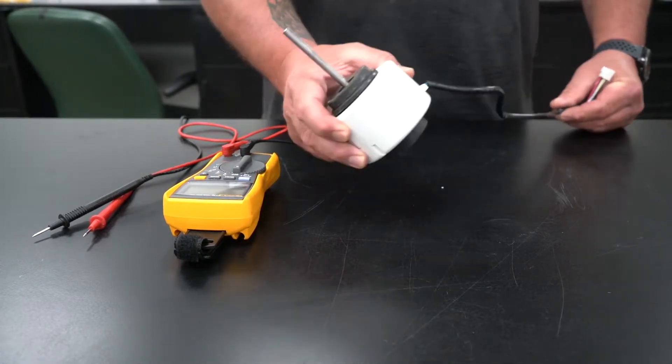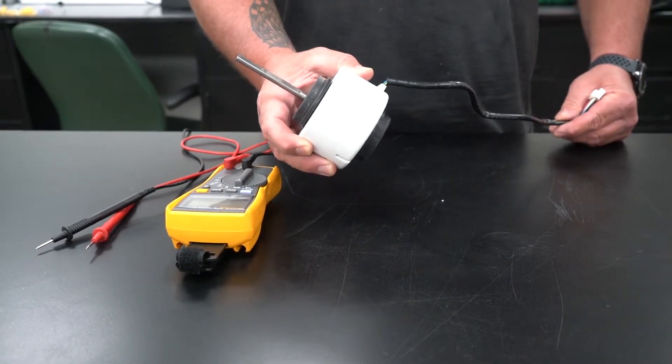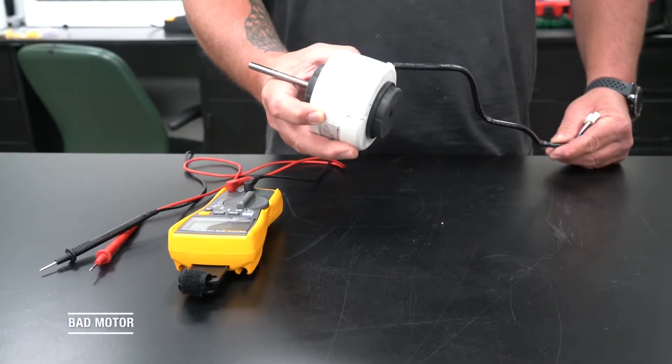Today we are going to check a DC motor from the indoor head of a ductless mini split. This is a bad motor.